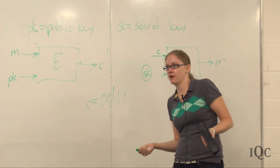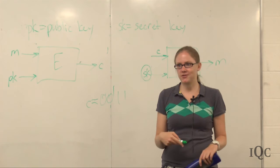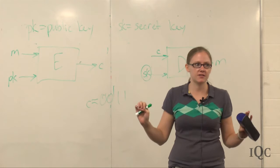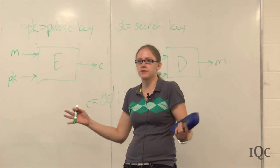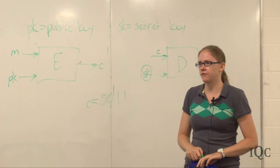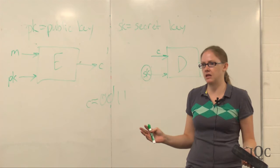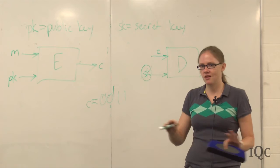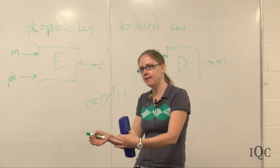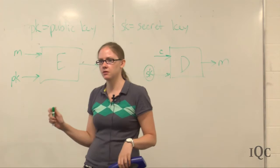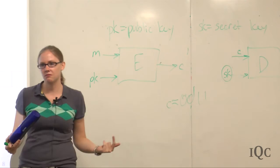For example, factoring is believed to be very hard, while multiplying two numbers is easy. Nobody knows for sure that factoring is hard, but using the best known methods, a sufficiently large number — perhaps just a few hundred bits — could not be factored in the time remaining in the life of the universe. So even though multiplication is easy, factoring is hard. That's one example of a problem where it's easy to go one way but difficult to go back.